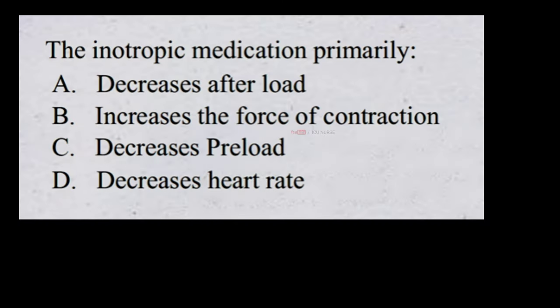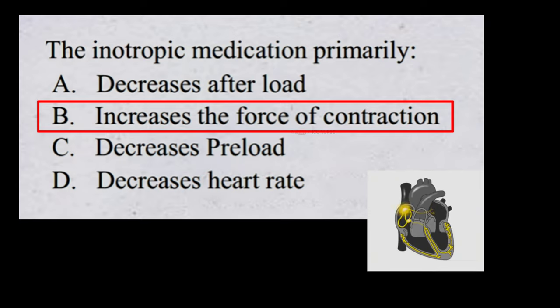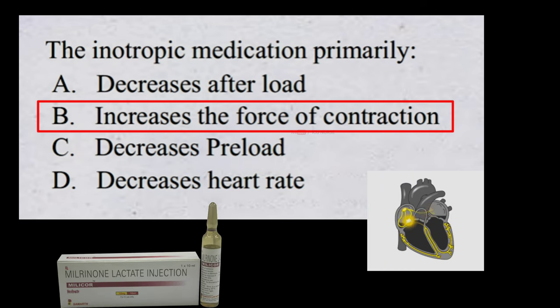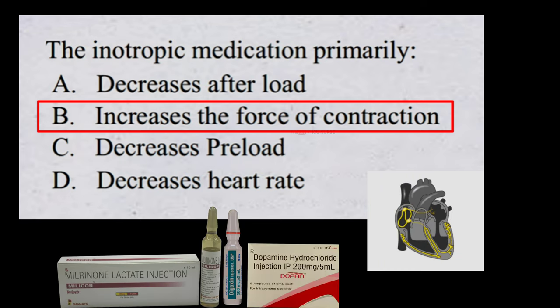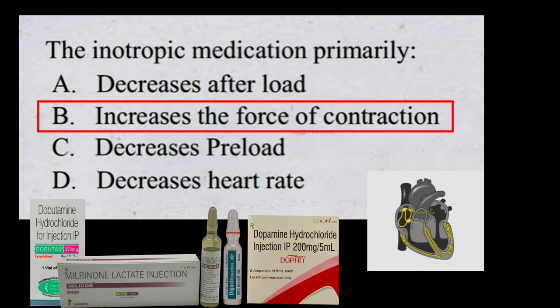The inotropic medication primarily: A. decreases afterload, B. increases the force of contraction, C. decreases preload, D. decreases heart rate. The correct answer is B, increases the force of contraction. Inotropic agents such as milrinone, digoxin, dopamine, and dobutamine are used to increase the force of cardiac contractions.